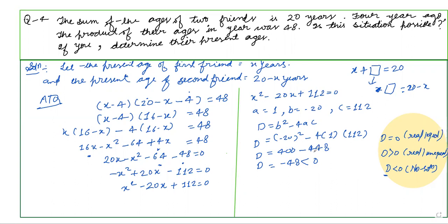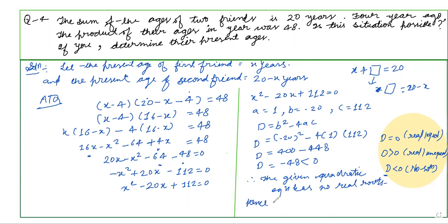Since D is negative, the equation has no real roots — we cannot find the roots. The given quadratic equation has no real roots. Hence, the given situation is not possible. We will move on to the next question.